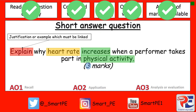Now remember the command word in this question is 'explain', so we're trying to justify the fact that the heart rate increases during physical activity. You should also know that the heart is responsible for pumping oxygenated blood to the working muscles. So for the first mark you need to say what happens to the demands for oxygenated blood when we exercise.